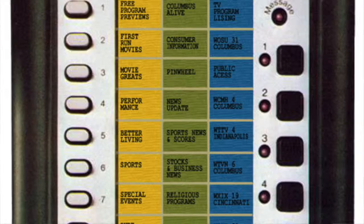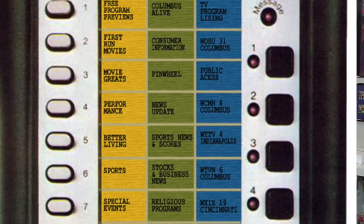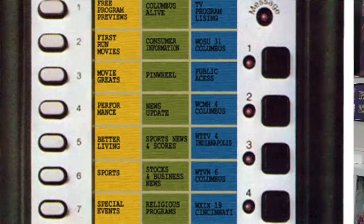There were multiple components involved with QUBE. There was a remote — it was big, it was clunky, and it was wired, not wireless. It had a lot of big physical buttons on it. There were three sets of 10 channels each. There were 10 pay-per-view channels, so this is very early pay-per-view. There were movies, sports, and events.